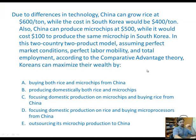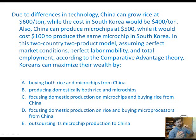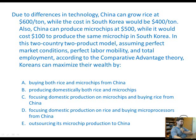Here is your next bonus question. I like to include this type of question on exams. The numbers will be different, so no need to memorize this specific question — better to understand what's going on so you can recognize it again. The answer is C — focusing domestic production on microchips and buying rice from China. Even though Korea can make both products better, it is more profitable based on comparative advantage theory to focus on the more profitable product and buy the less profitable one.